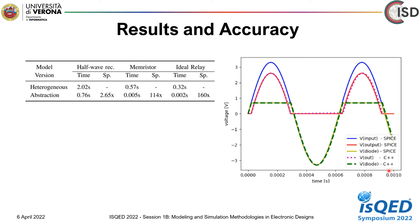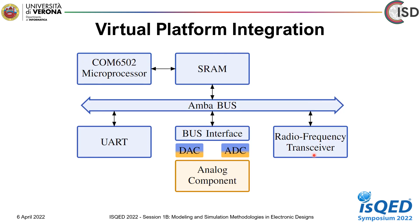The C++ abstracted model is integrated into a virtual platform. This virtual platform is basically composed of an AMBA bus that interconnects all the components. Inside the digital platform are a 6502 microprocessor, SRAM, UART, and a Radio Frequency transceiver. There is also a MEMS (Micro-Electromechanical System) accelerometer composed of a Digital-to-Analog Converter and an Analog-to-Digital Converter.